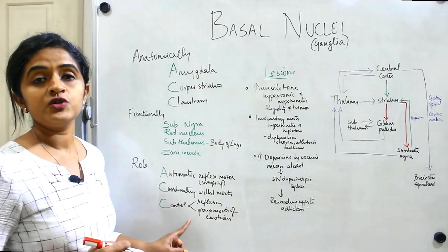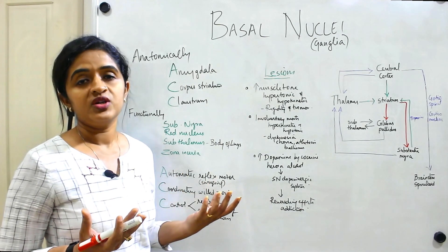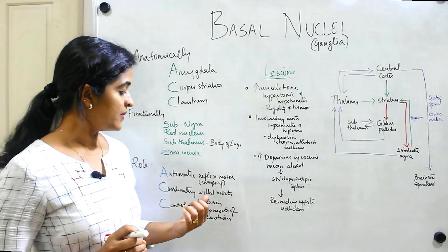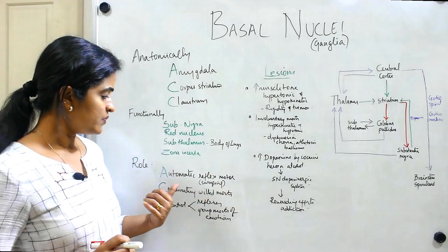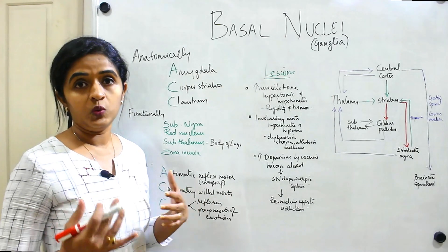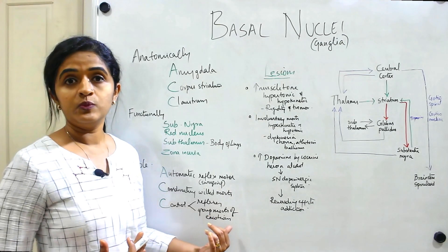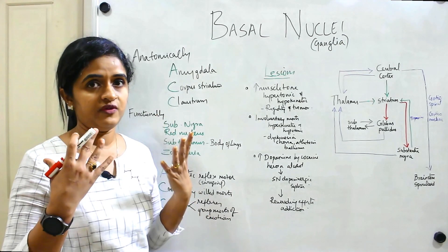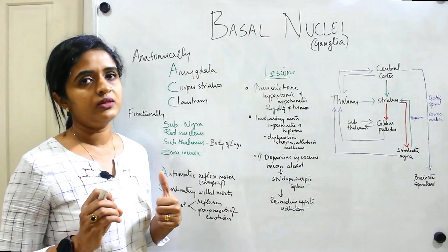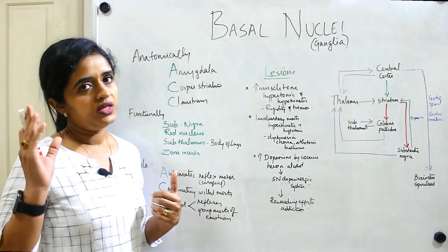The third C in ACC stands for control — control of reflexes, and control of group movements responsible for emotional expression. You can easily correlate these functions using Parkinsonism. In Parkinsonism, hand swinging is lost (A is lost), coordination of willed movements is lost (they can't initiate walking properly), and group movements of emotional expression are lost — they have a masked facies.